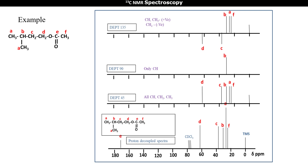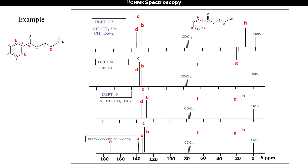Thus, with the help of DEPT, we can easily differentiate between CH3, CH2, and CH groups in an organic compound. Now we will see another example.